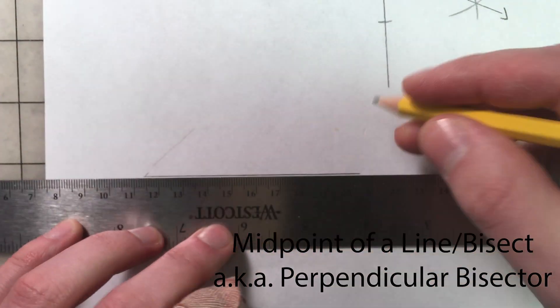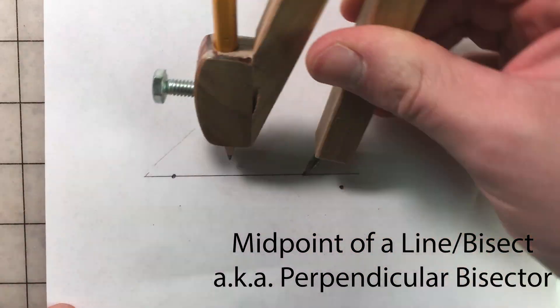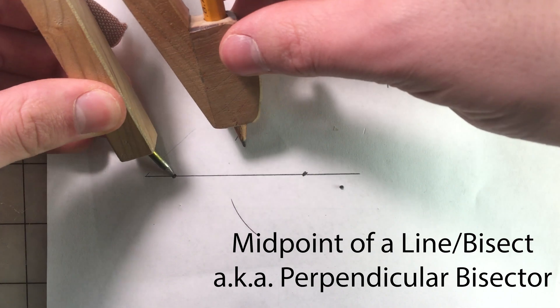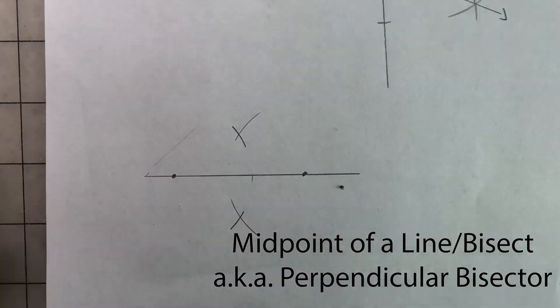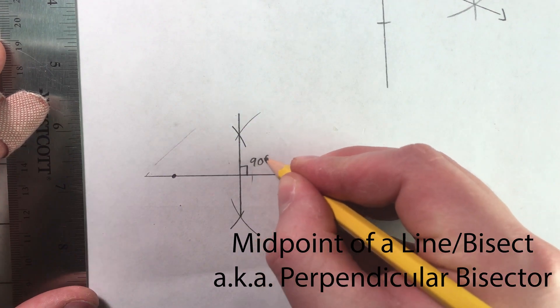From any two points, set a compass that spans over half the distance between the two points. From one point, draw an arc on either side of the line. Then draw arcs from the other point so that they intersect with the previous arcs. A line drawn through two intersection points will be perpendicular to the original line.